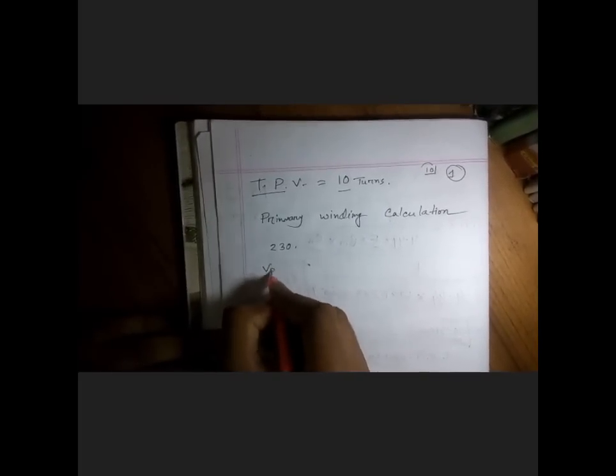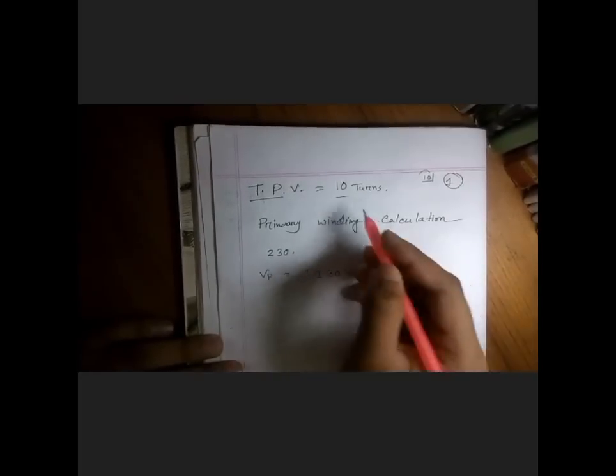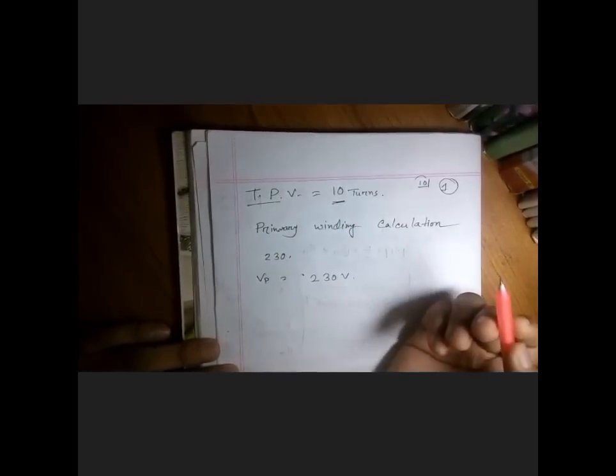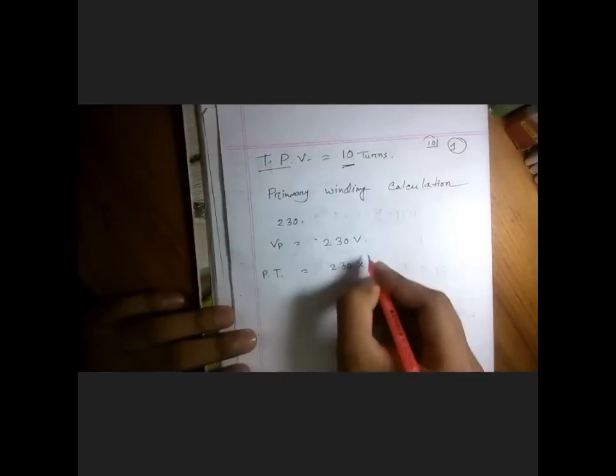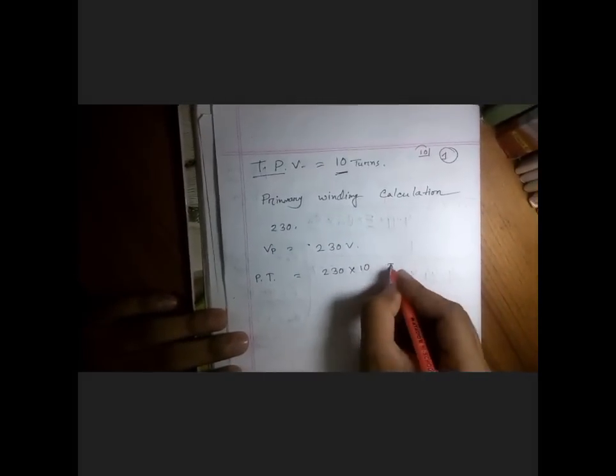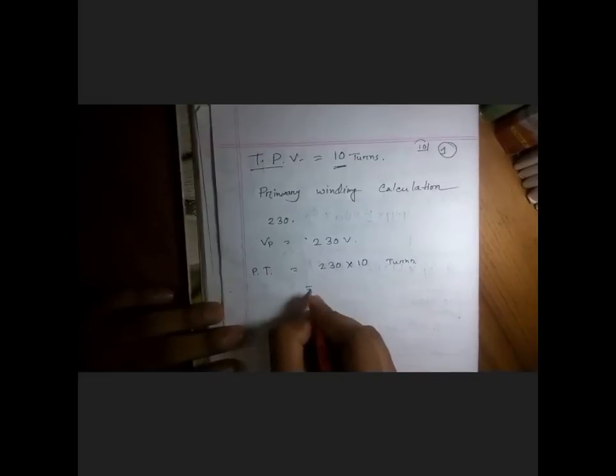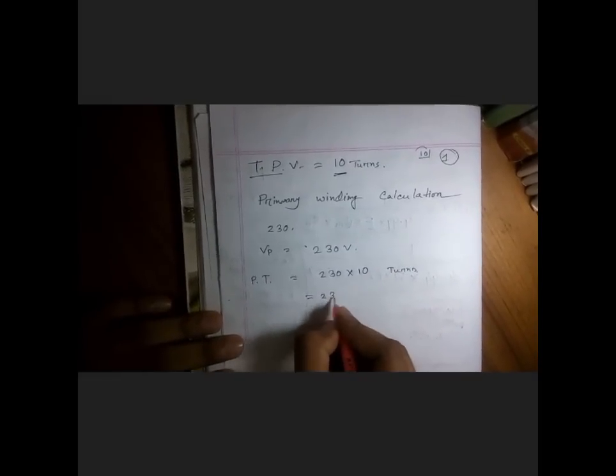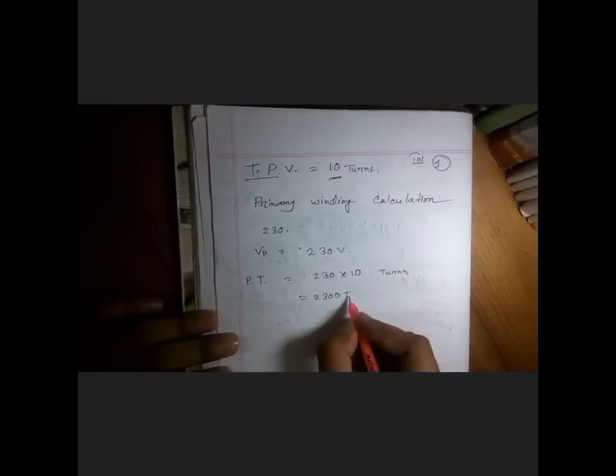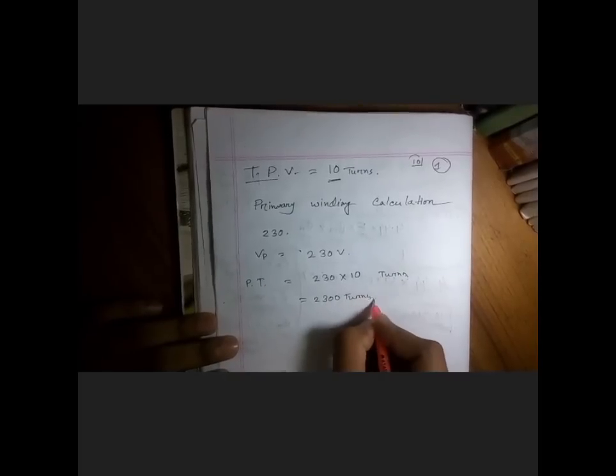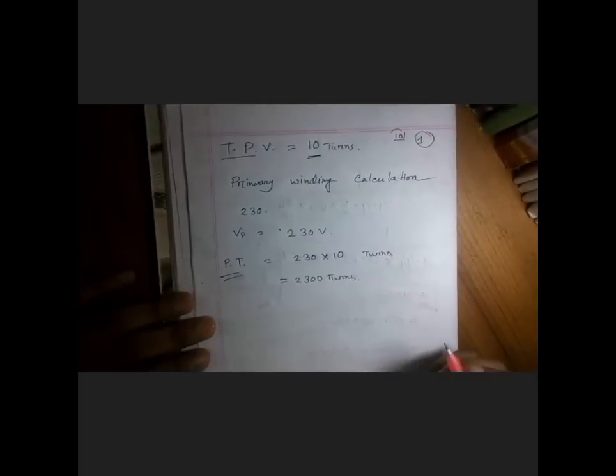Then so Vp equal to 230 volt and turns per volt equal to 10 turns. So primary turns should be 230 into 10, okay turns. So it's about 2300, two thousand three hundred turns for primary winding.